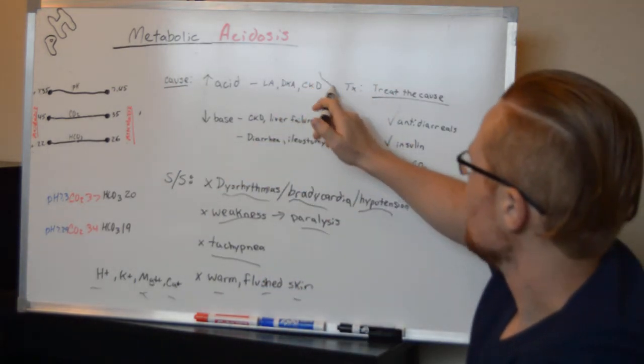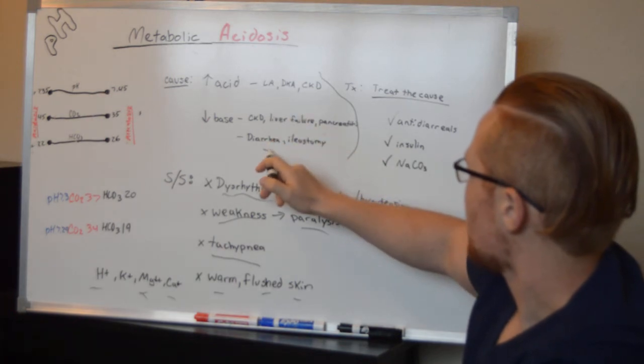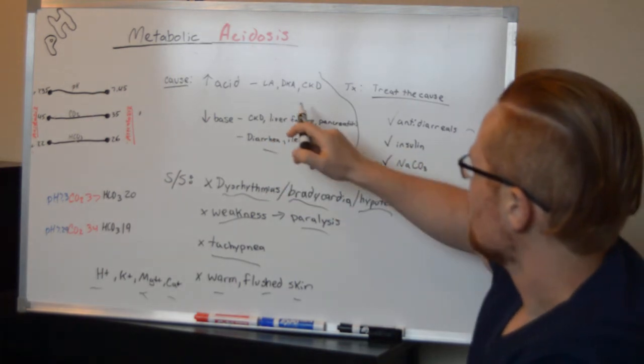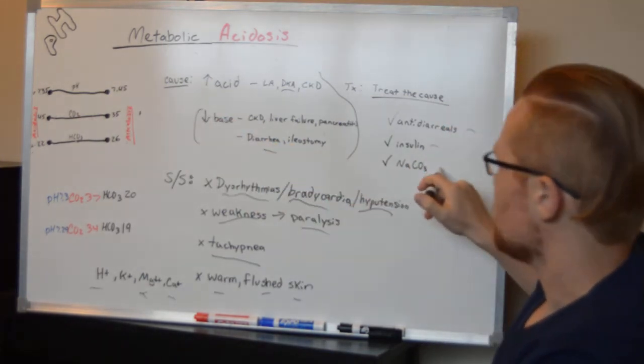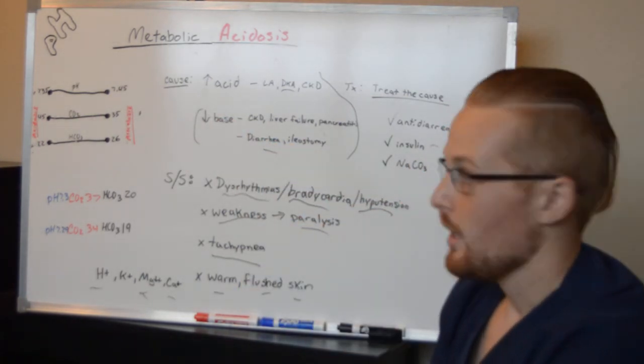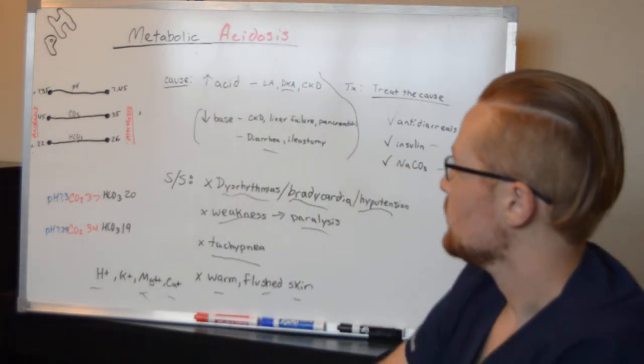Treatment: you identify the cause. If the patient's having lots of diarrhea, give them anti-diarrheals. If it's diabetic ketoacidosis, give them insulin. If they don't have enough base, give them sodium bicarbonate. That's metabolic acidosis in a nutshell.